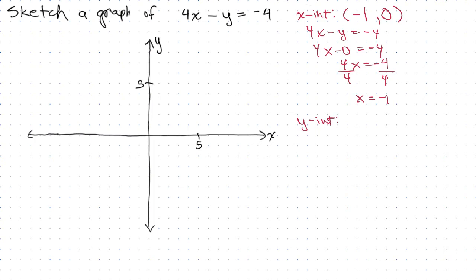Now we're going to do the y-intercept. For every ordered pair on the y-axis, you put in 0 for x. So we'll take the same equation and solve for y when we put in 0 for x this time.